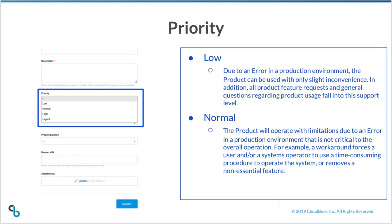Here, you can help us prioritize the request by selecting one of the following. A low priority is due to an error in a production environment where the product can be used with only slight inconvenience. In addition, all product feature requests and general questions regarding product usage fall into this support level.